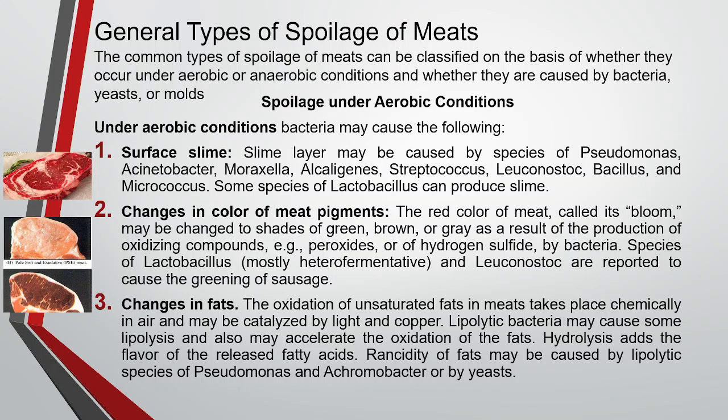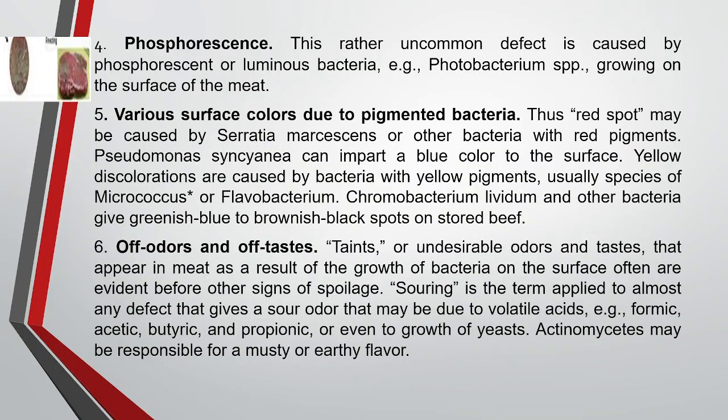Changes in fat occur as oxidation of unsaturated fats in meat takes place chemically in air, catalyzed by light and copper. Lipolytic bacteria oxidize the fat; hydrolysis occurs and rancidity results. Phosphorescence can also occur due to the growth of luminescent bacteria, causing a glowing appearance from their pigments. Various surface colors result from pigmented bacteria: Serratia causes red spots, Pseudomonas gives a blue color, and Chromobacterium produces a brownish-black color on stored beef.